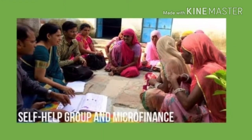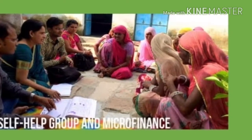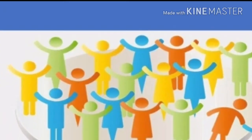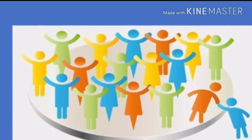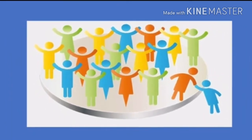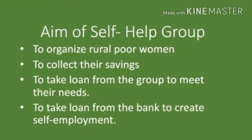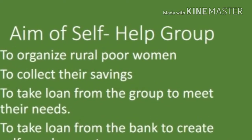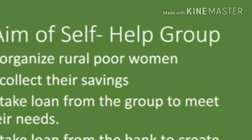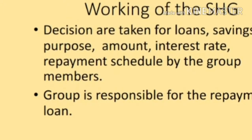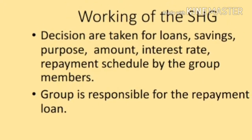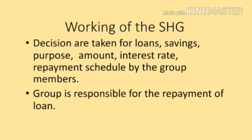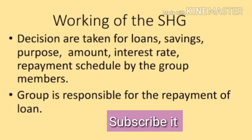Next is the Self-Help Group. It has 15 to 20 members who all belong to the neighborhood. They meet regularly and save regularly, with savings of Rs. 25 to Rs. 100 regularly. The main aim of the self-help group is to collect deposits from all the members. The group takes loans from the bank to create self-employment opportunities. All decisions about loans and savings — including purpose, amount, interest rate, and repayment schedules — are discussed among the members of the group.